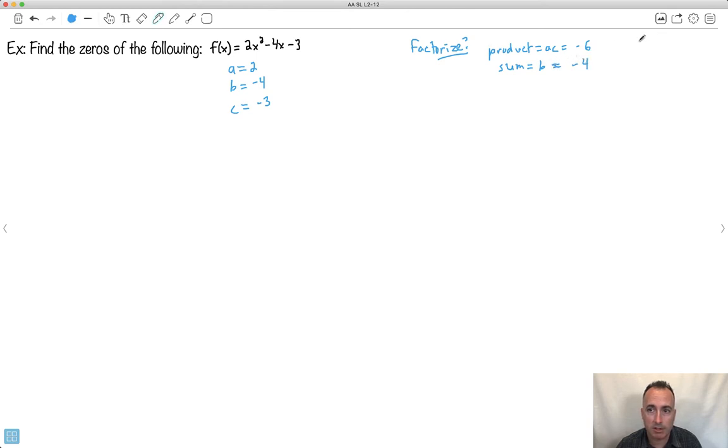So we're trying to find two numbers who multiply to minus six and who add up to b, which is minus four. Do those numbers exist? All the products of negative six: negative one and six, one and negative six, two and negative three, negative two and three. Do any of them add up to minus four? Nope. It doesn't factorize.